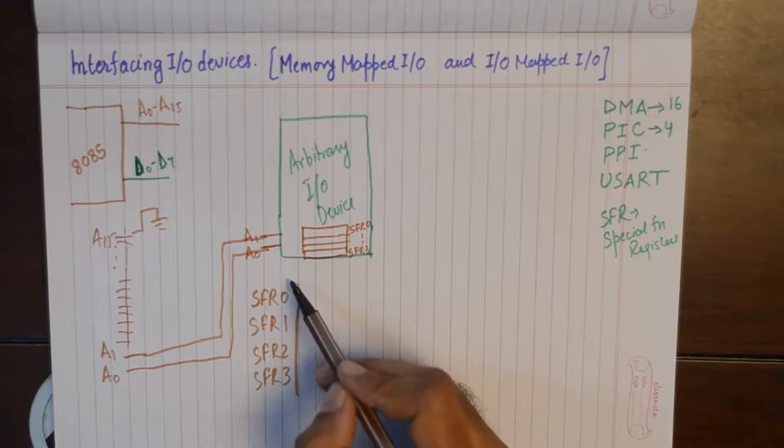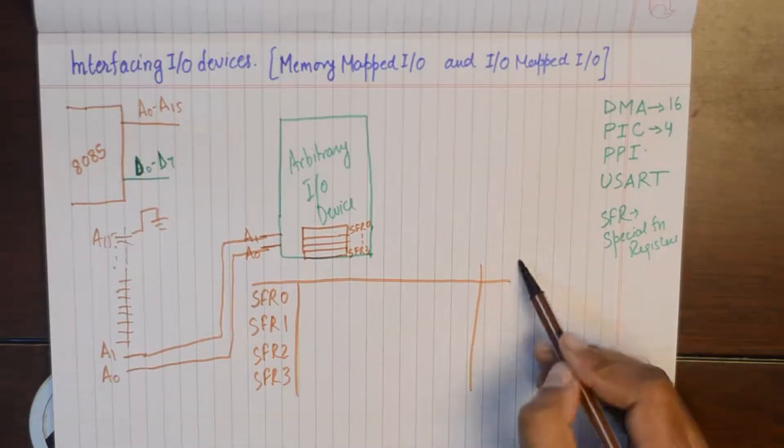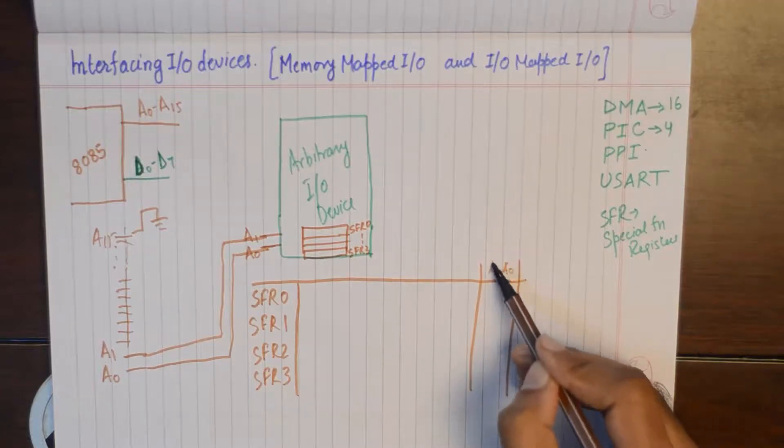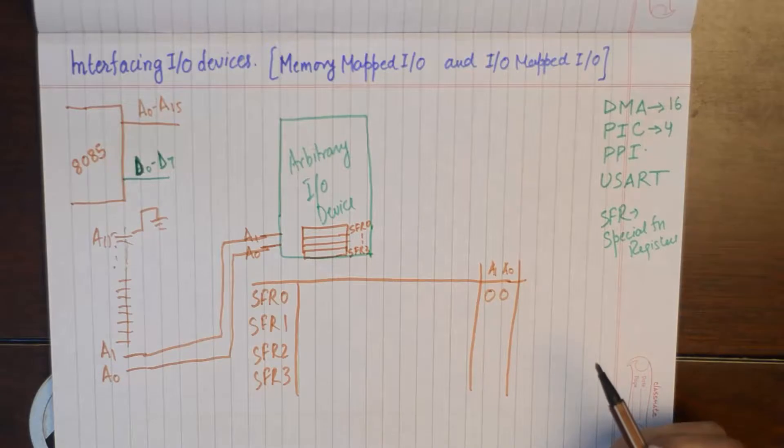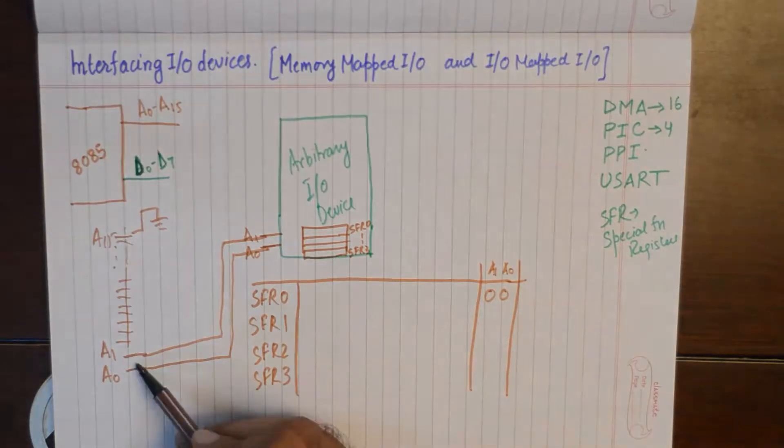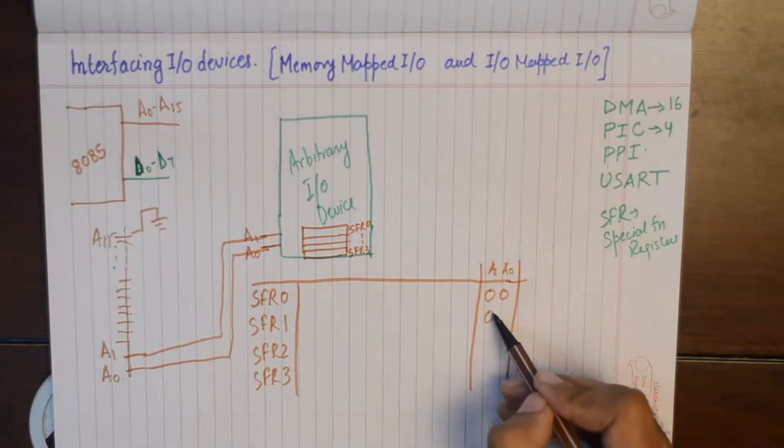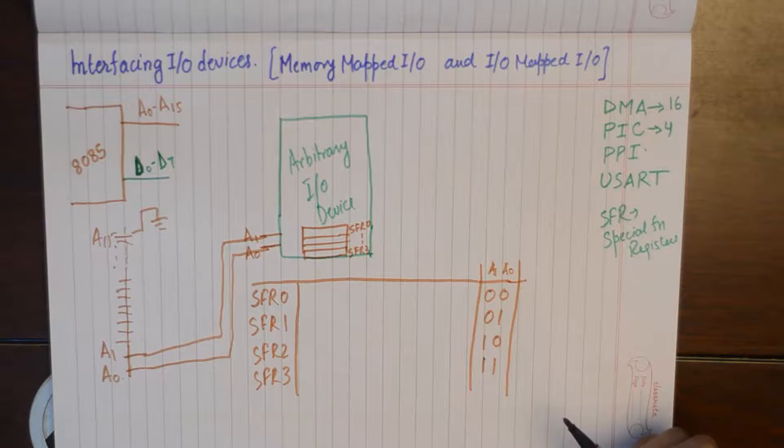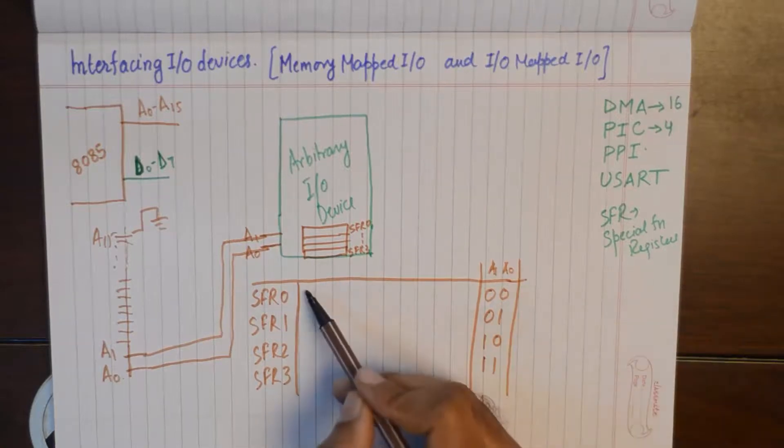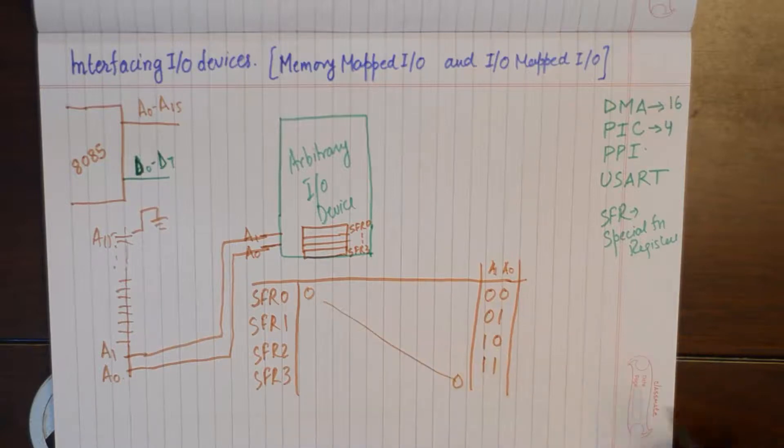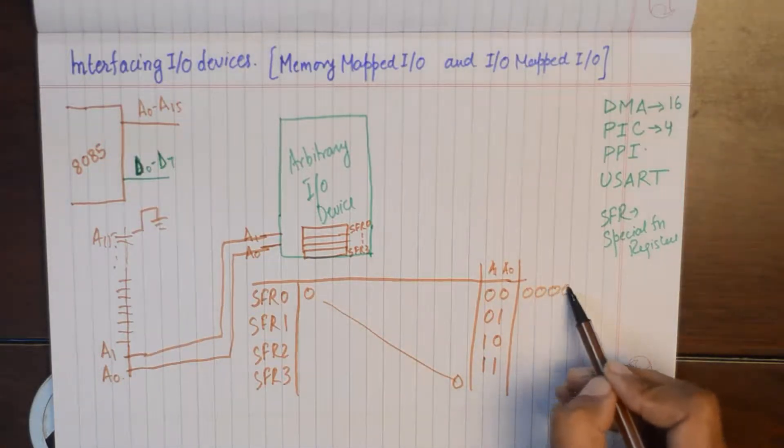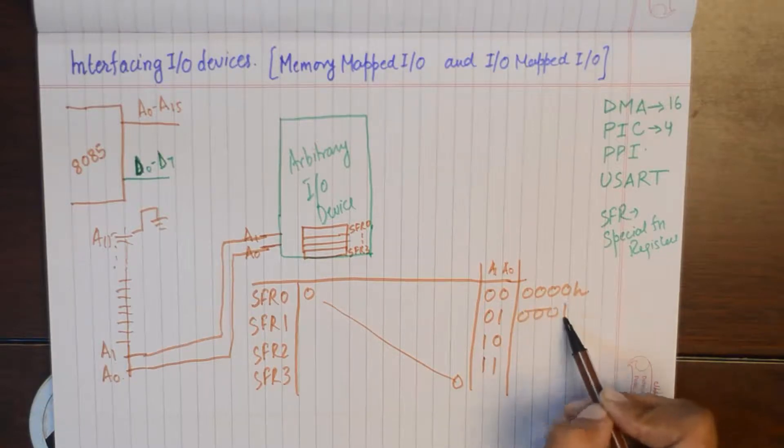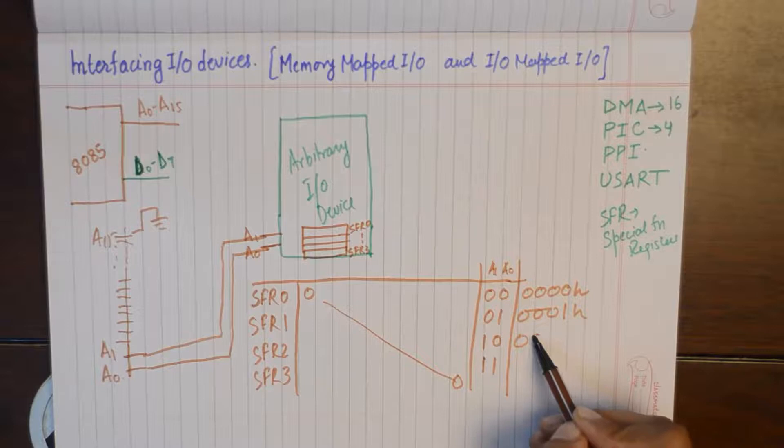So the final addresses for these 4 SFRs will become: SFR 0 will be accessed when A0 and A1 have 00 on them, SFR 1 will be accessed when I have 01 here on these 2 lines, similarly 10 will lead me to SFR 2, and 11 will lead me to SFR 3, and the rest of them are permanently made 0. So the final address becomes 0000H, 0001H, 0002H, 0003H.